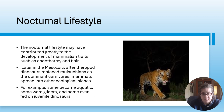The nocturnal lifestyle may have contributed greatly to the development of mammalian traits such as endothermy and hair. Later in the Mesozoic, after theropod dinosaurs replaced archosaurs as the dominant carnivores, mammals spread into other ecological niches - for example, some became aquatic, some were gliders, and some even fed on juvenile dinosaurs.